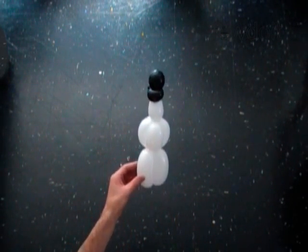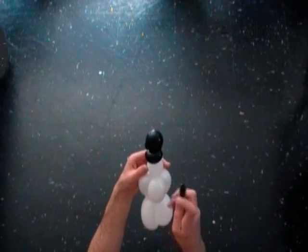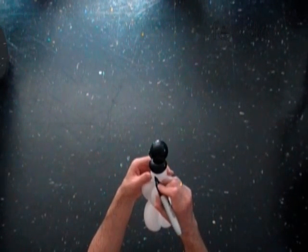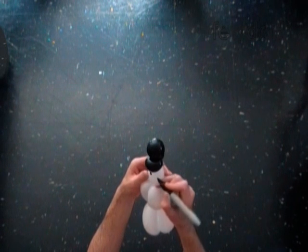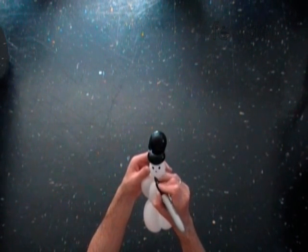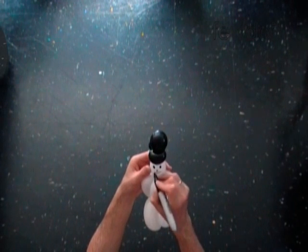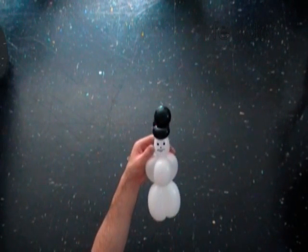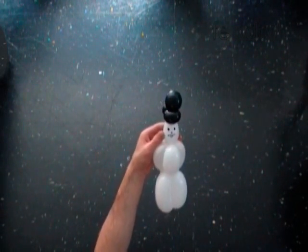Use a permanent marker to draw the face of the snowman. Drawing a face always makes the sculpture look better. And best of all you don't need twisting skills to do it. Most kids enjoy drawing.